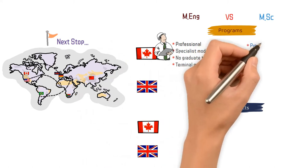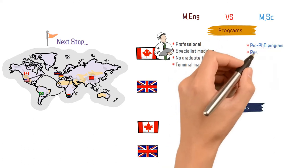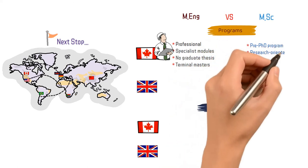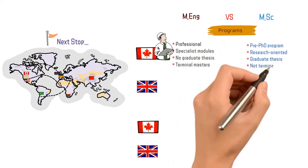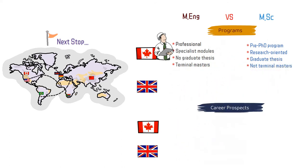On the contrary, the Master of Science is a pre-PhD program, that is to say, more research-oriented. Here, a graduate thesis is required.